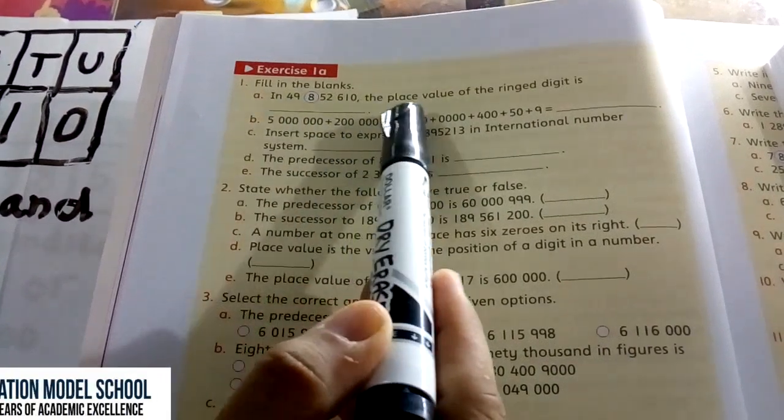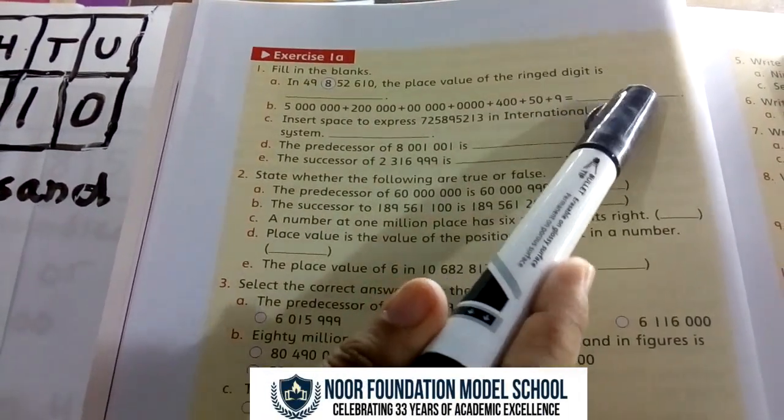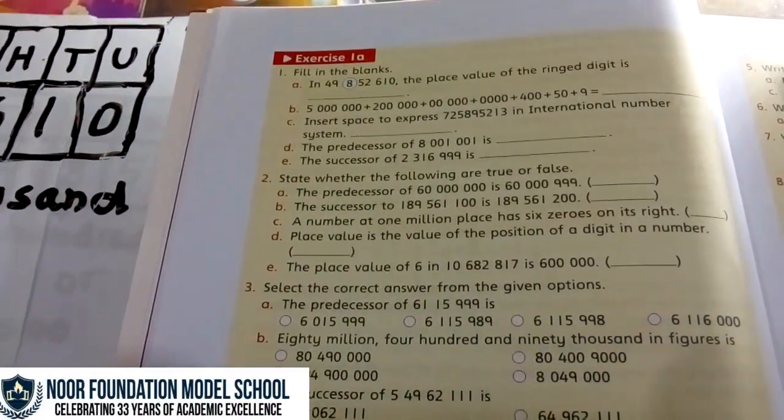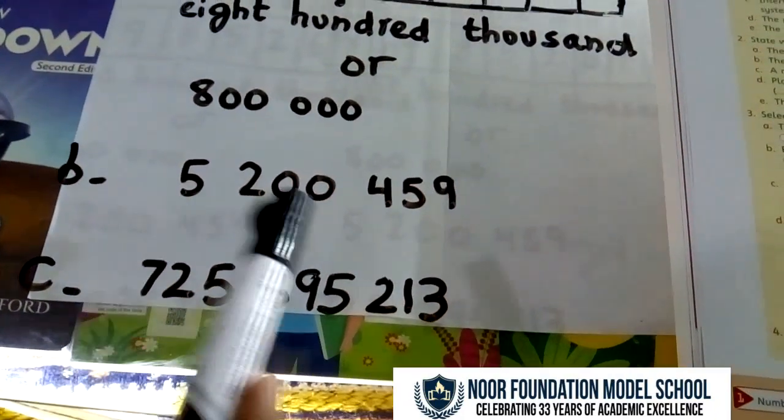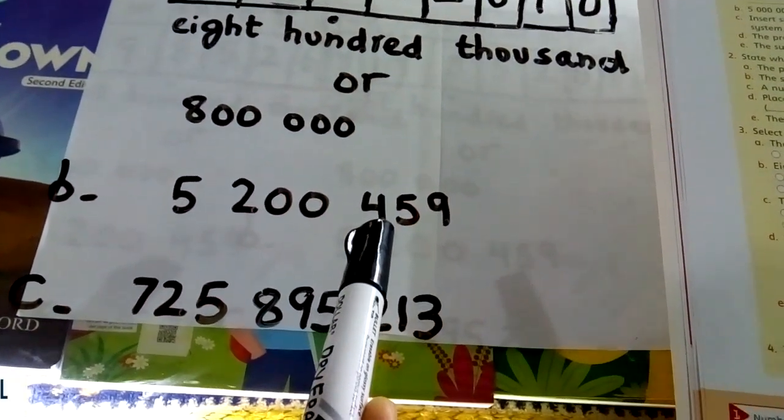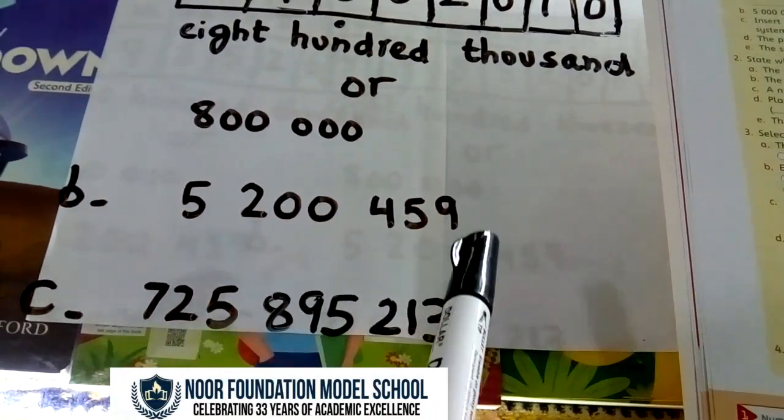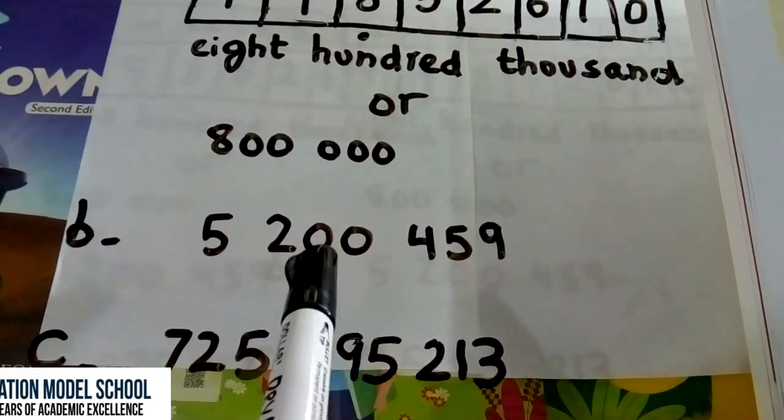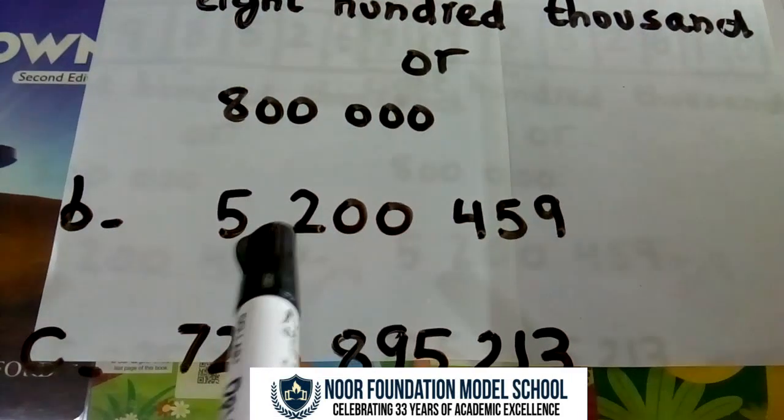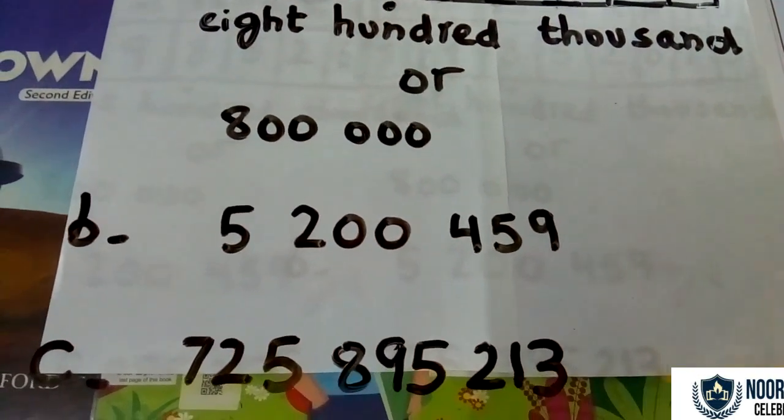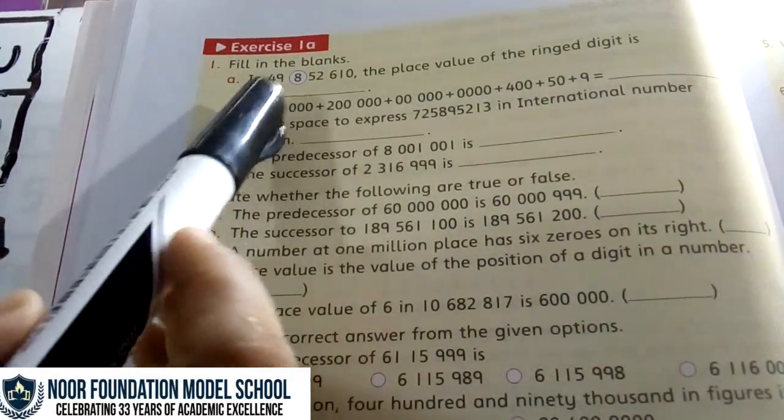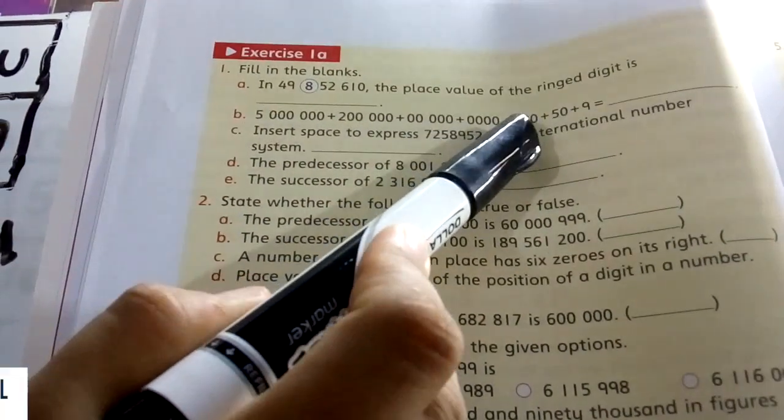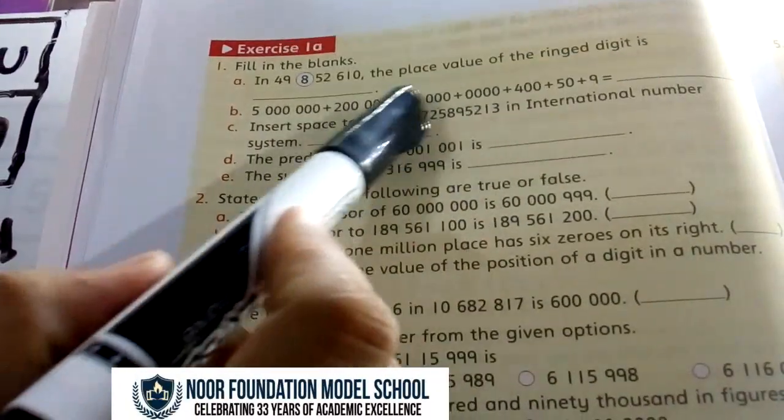This is the number. This is the question: you have to write the expanded form into its original number. So, you know expanded form—you have to write the first number. So, this is the answer. And after every three digits, you have to give space in international numbers. Like unit, ten, hundred, and then some space or comma, and then thousand, ten thousand, and hundred thousand, and then some space or comma. So, in expanded form: 5, 2, 0, 0, 4, 5, and 9—the first digit of every number.